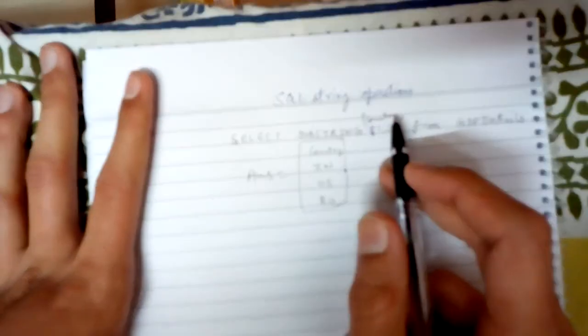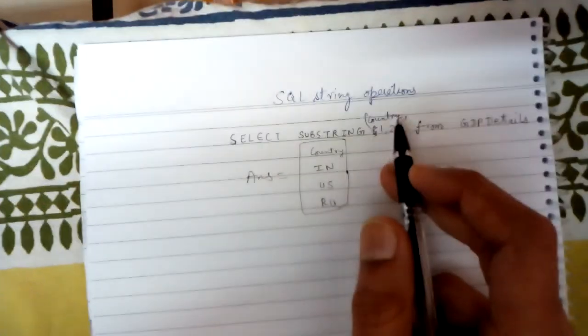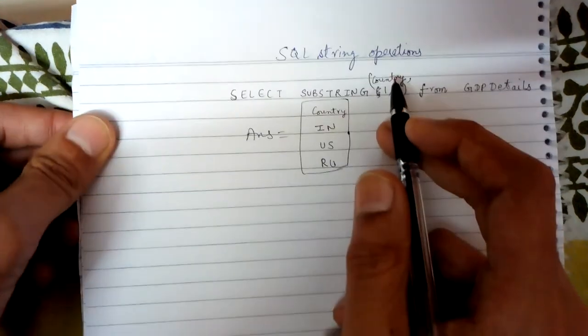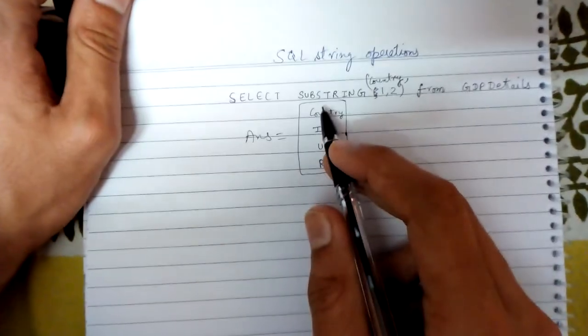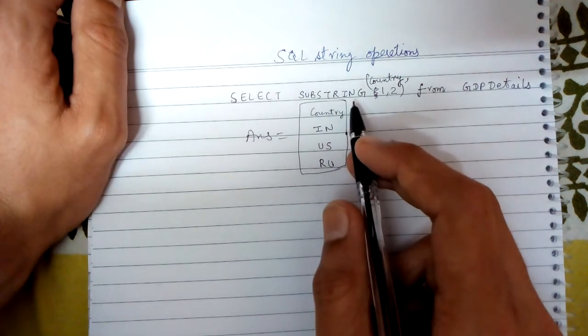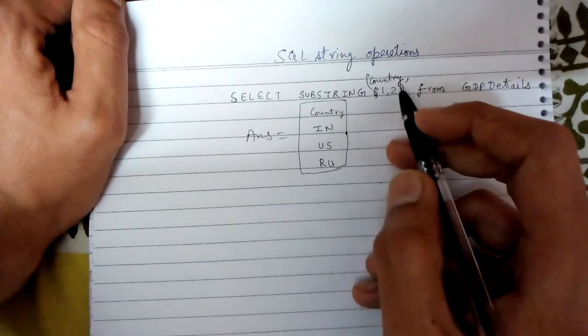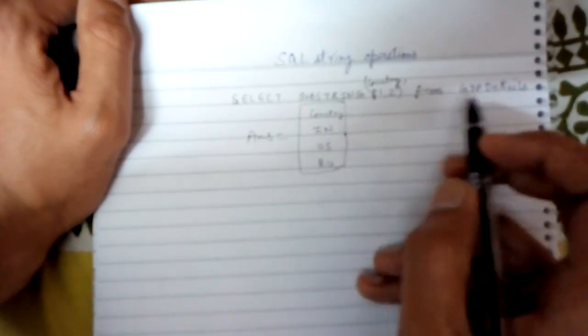We will be looking at SQL string operations. In SQL there are some string operations provided, like for example, I will be taking the example of substring operation. In this operation, let's say we are given GDP